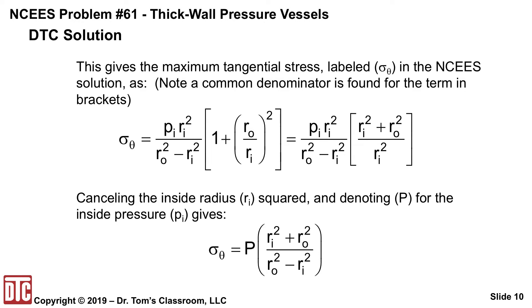And that Ri squared in the denominator is going to cancel the one in the numerator after the Pi. So that will go away, and we're going to change the Pi to just a capital P. So this is what we're left with now.